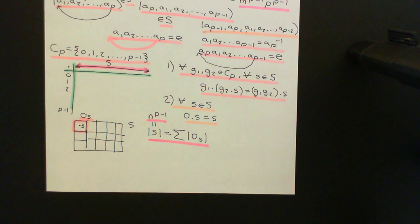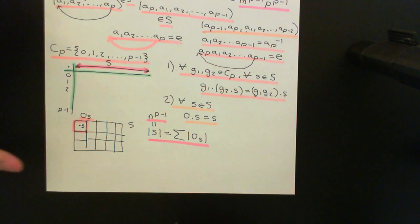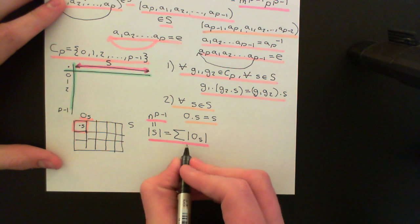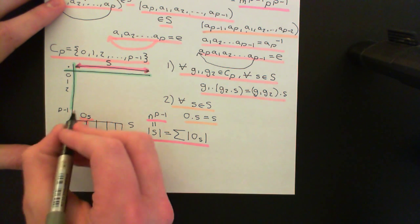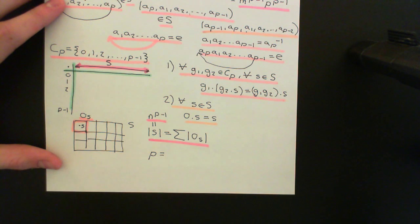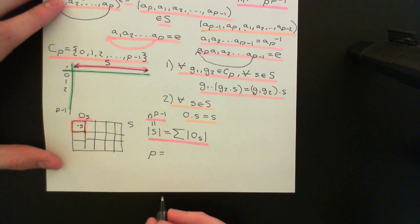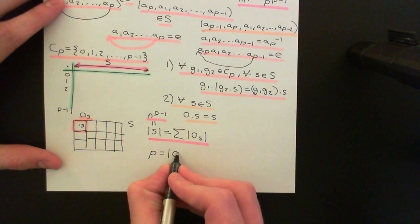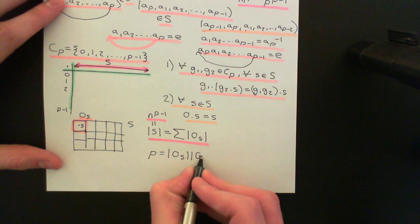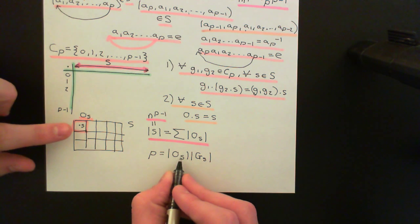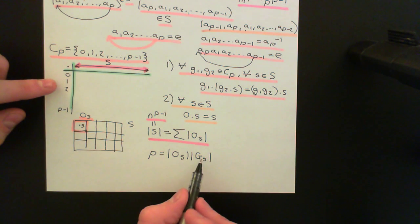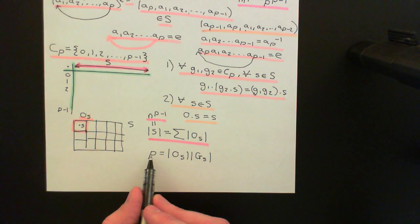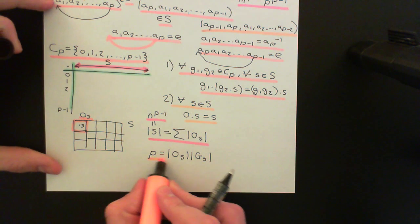The next thing to apply is the orbit-stabiliser theorem. We can gain understanding of the size of an orbit through this theorem. It tells us that the order of the group acting on the set — which in this case is P, since we've chosen the cyclic group on P elements — equals the order of an orbit times the order of the stabiliser of that element. So the order of the orbit of s times the order of the stabiliser of s must equal the prime P.